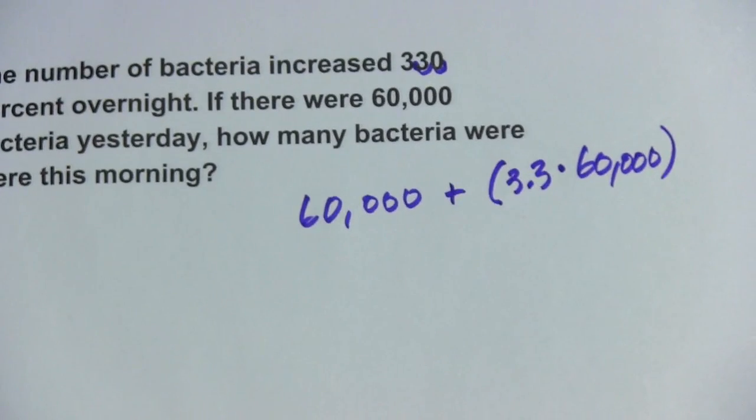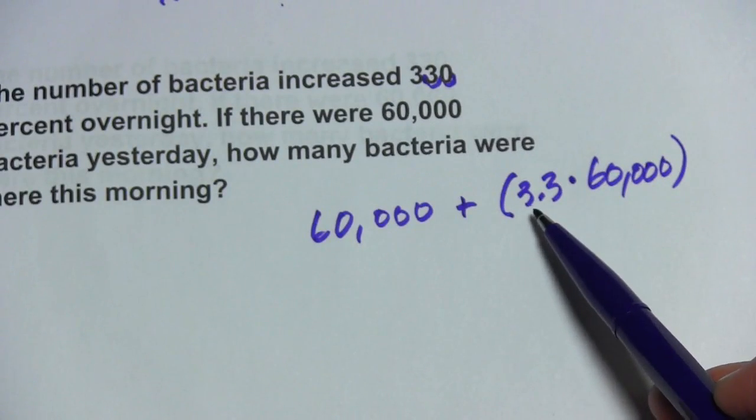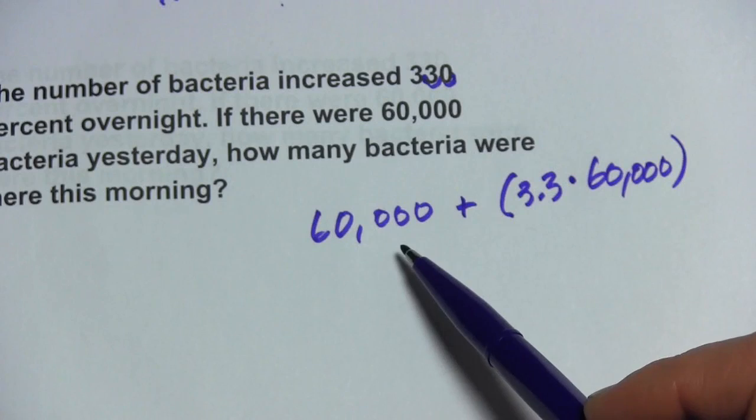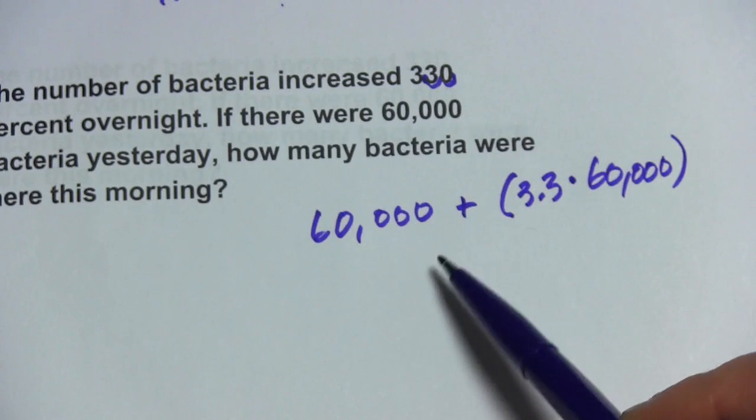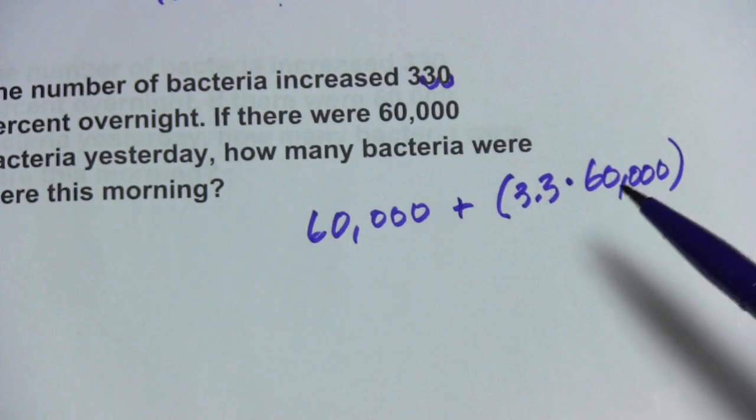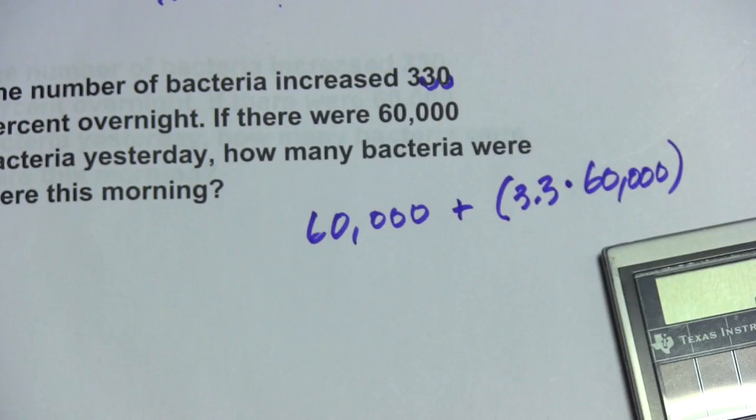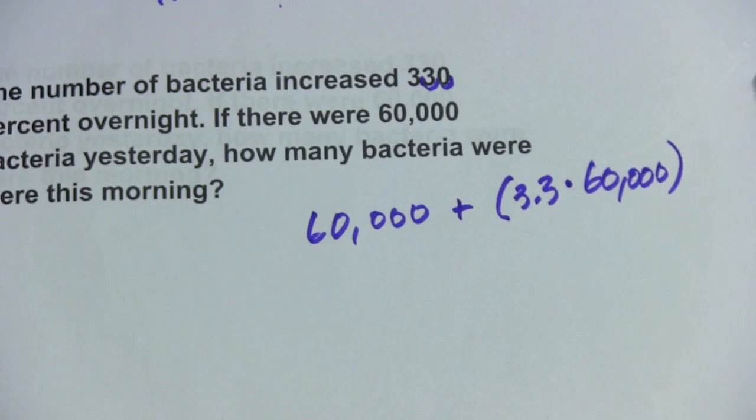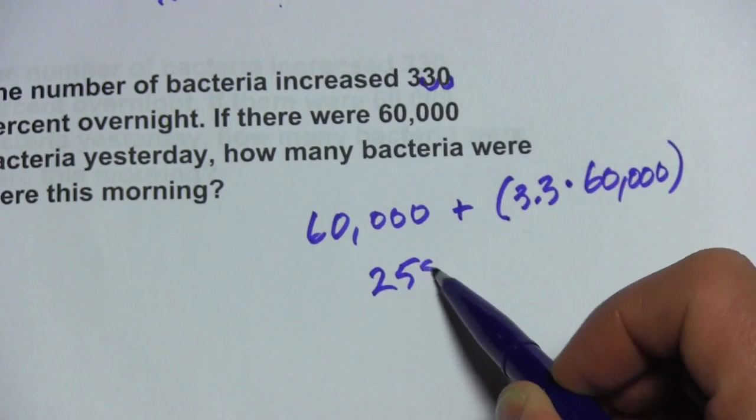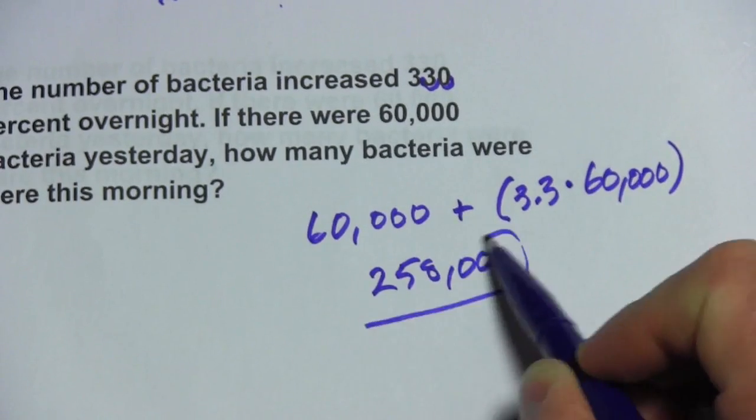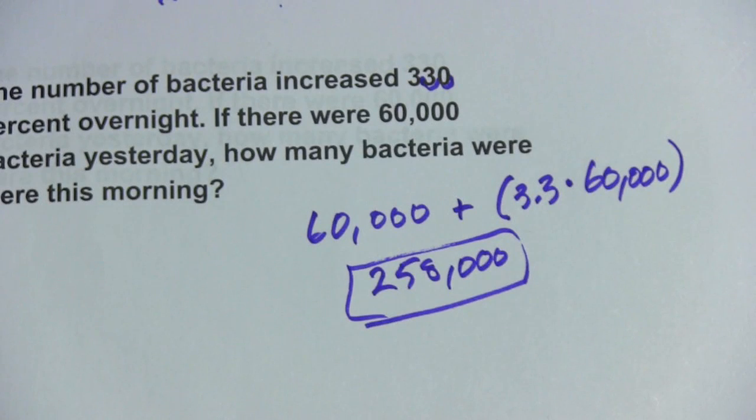So that is the calculation we're going to have to do, 3.3 times 60,000 and then add in the 60,000 that we started with because those guys didn't go anywhere. So let's do those calculations, 3.3 times 60,000, that's 198,000 plus the original 60,000 and we get 258,000 bacteria. So that's a little bit of work with percents greater than 100.